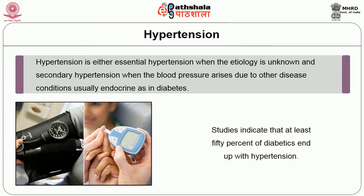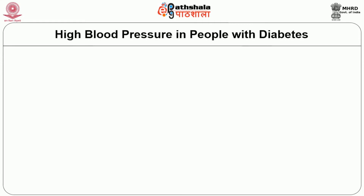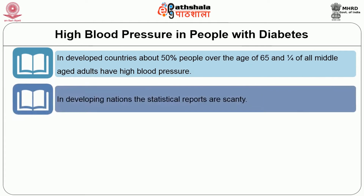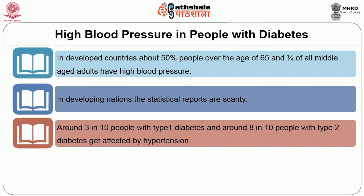Studies indicate that at least 50% of diabetics end up with hypertension. In developed countries, about 50% of people over the age of 65 and one-fourth of all middle-aged adults have high blood pressure. Around 3 in 10 people with type 1 diabetes and around 8 in 10 people with type 2 diabetes get affected by hypertension.